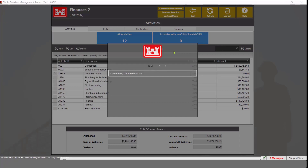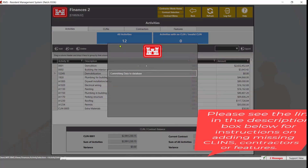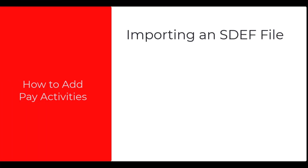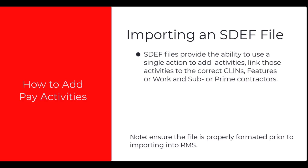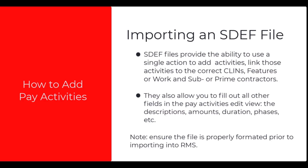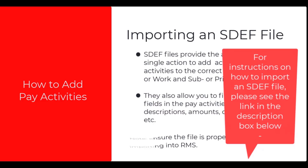Note: if a CLIN, contractor, or feature does not show in their respective tabs, they will need to be added in RMS. Please see the links in the description box below for instructions on adding missing CLINs, contractors, or features. The second way to get activities added — and the most convenient — is through importing an SDEF file. After the SDEF has been uploaded and imported, if properly formatted, all activities will be added linked to the proper CLINs, features, and subcontractors. You will also be able to import the activity amounts, descriptions, and other fields related to the pay activities from the SDEF file. For instructions on how to import an SDEF file, please see the link in the description box below.